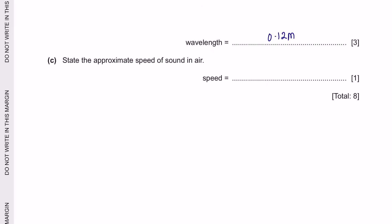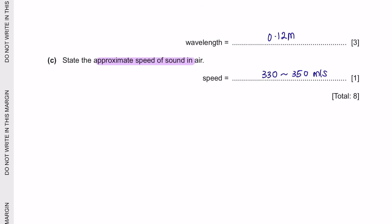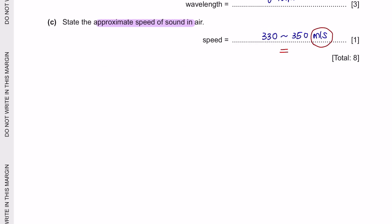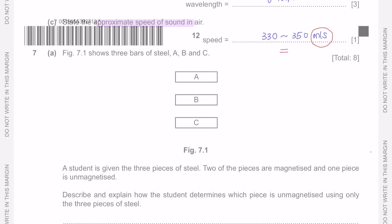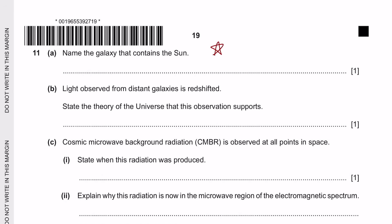Question part C: State the approximate speed of sound in air. The speed of sound in air is approximately 330 to 350 m/s — write any value in that range and include the unit. That's all for this video. I'll be discussing questions 7 to 11 in the next video. Thank you for watching!